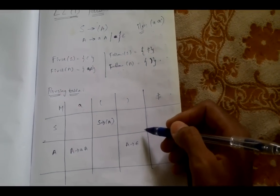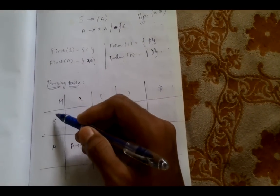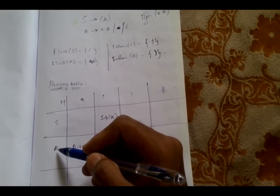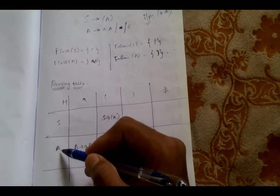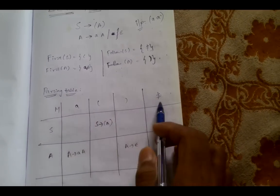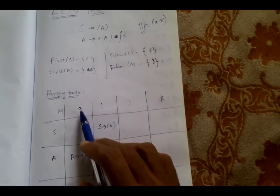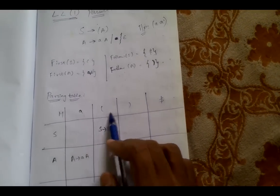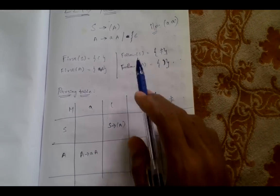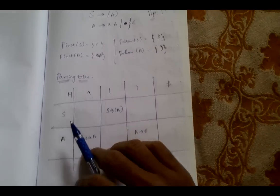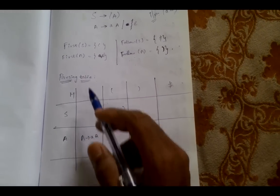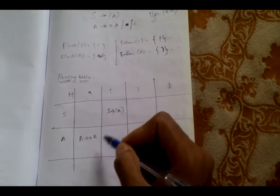The parsing table basically contains, on the vertical side, all the non-terminals of the grammar — that is S and A — and on the horizontal side, all the terminals: 'a', open bracket, closing bracket, and dollar. These are the terminals in the grammar, and based on the first elements we need to fill up this table.